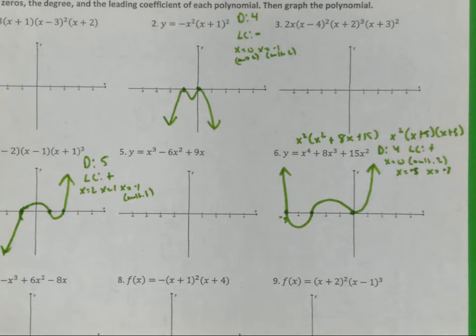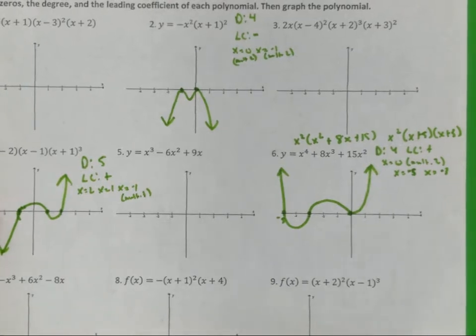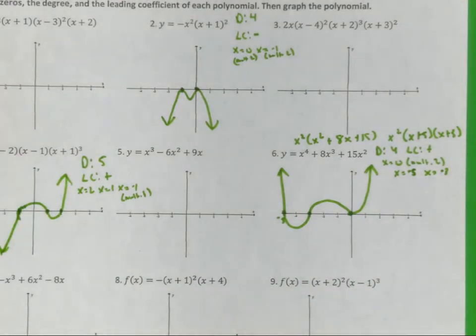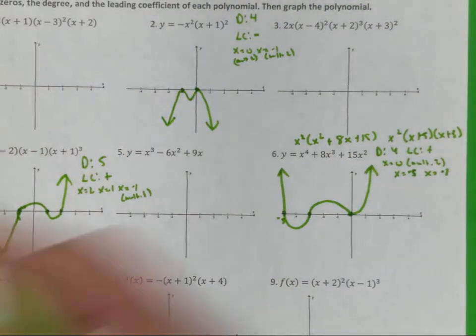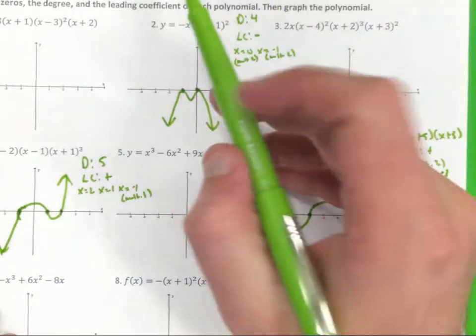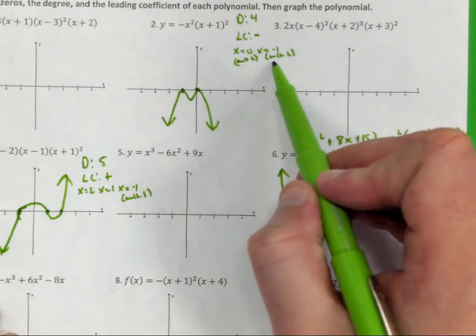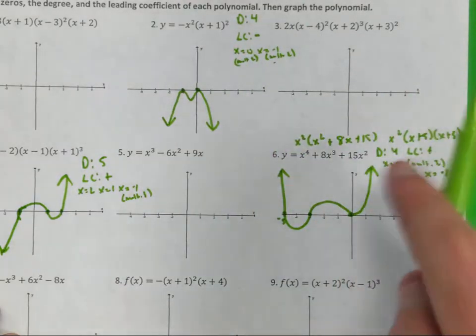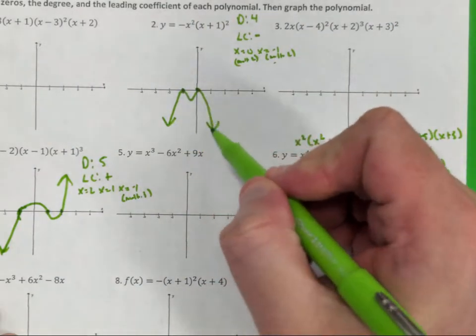Alright, number two, what form is this in? Factored form. So I have 1, 2, 3, 4, degree 4 because each of them have multiplicity of 2. My leading coefficient is negative, so the ends are going to be sticking straight downward. Set them equal to 0, X equals 0 multiplicity of 2, X equals negative 1 multiplicity of 2. That means it's going to bump the graph. That's why you see that it bumps but does not go straight through it on number 2.